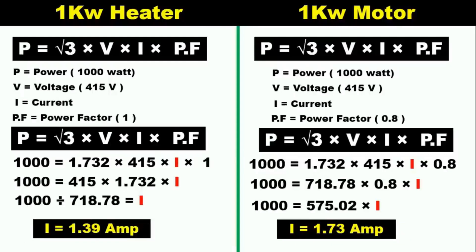So friends, you can see the difference — the current value of the heater is less and the current value of the motor is comparatively high. If asked in an interview which takes more current — a 1 kilowatt heater or a 1 kilowatt motor — the answer is simple: the motor is an inductive load and the power factor of an inductive load is always less than 1, which is why its current value is higher. This applies whether it is 1 kilowatt, 2 kilowatt, or any value — a resistive load always consumes less current and an inductive load always consumes more.